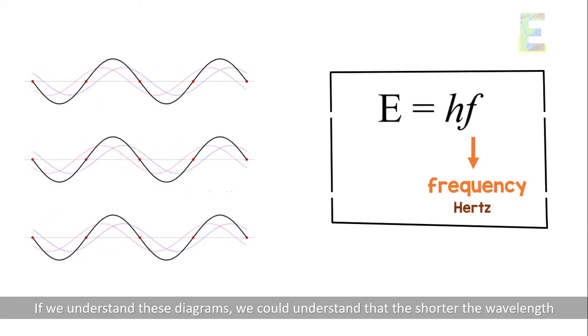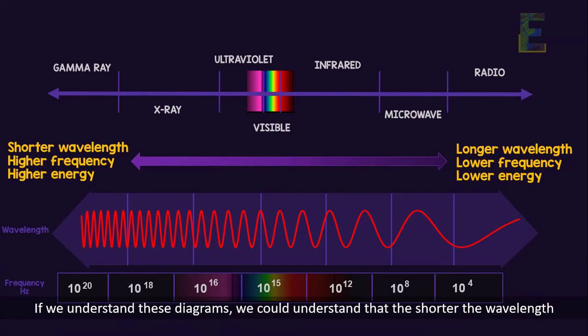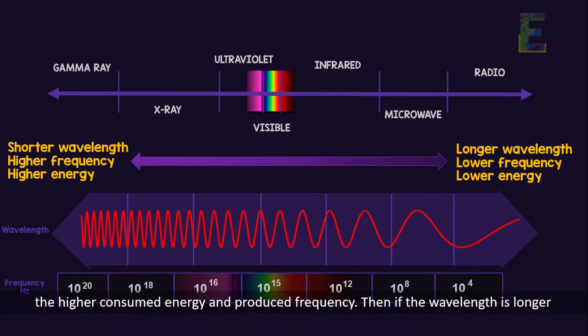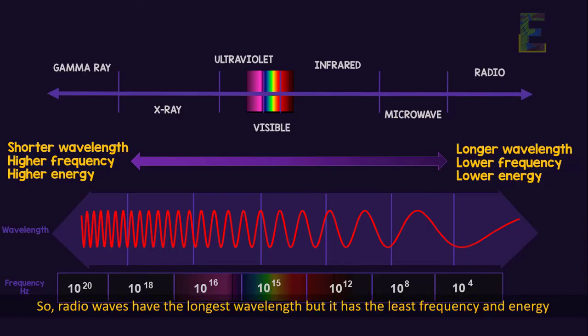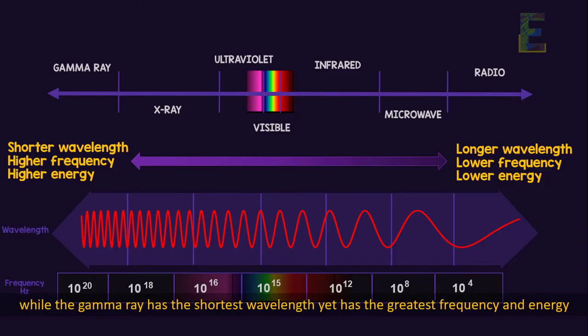If we understand these diagrams, we could understand that the shorter the wavelength, the higher the consumed energy and produced frequency. Then if wavelength is longer, the consumed energy and produced frequency is also lower. So radio waves have the longest wavelength but the least frequency and energy, while gamma rays have the shortest wavelength yet the strongest frequency and energy.